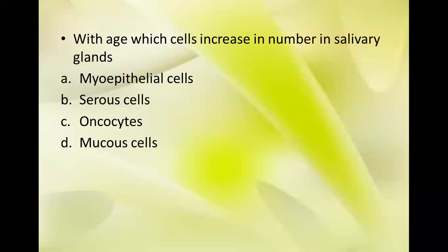Next question: which cell increases in number in salivary glands with age? Options: myoepithelial cells, serous cells, oncocytes, and mucus cells. The answer is C, oncocytes.